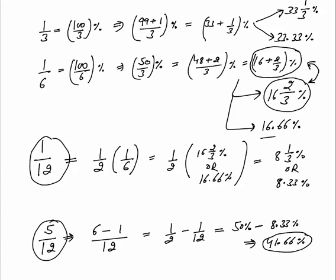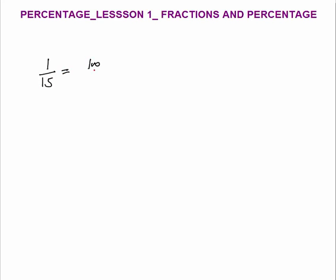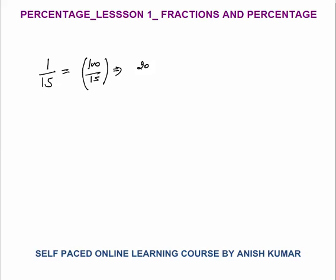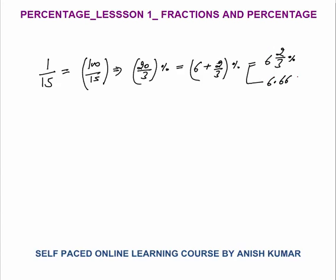Next, 1 by 15: this equals 100 by 15 percent. Dividing numerator and denominator by 5 gives 20 by 3 percent. Since 20 is not divisible by 3, write as 18 plus 2 by 3, giving 6 plus 2 by 3 percent — that is 6 and 2/3 percent, or 6.66 percent.